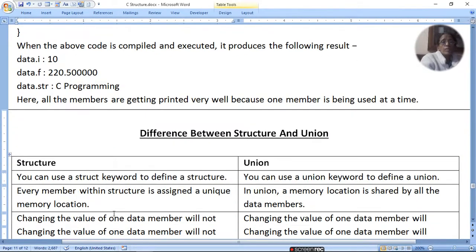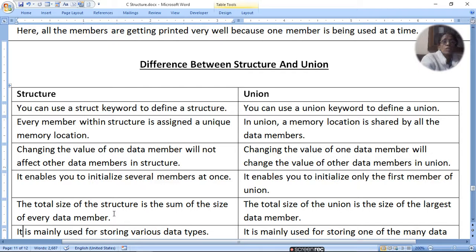What is the difference between structure and union? In structure, you use the struct keyword to define. In union, you use the union keyword. Every member within a structure is assigned a unique memory location. But in union, the memory location is shared for every member.